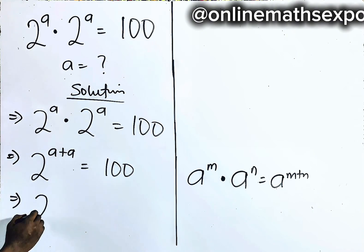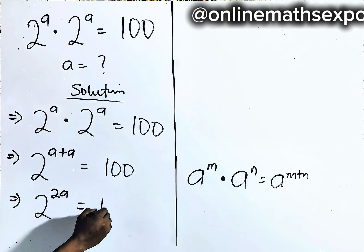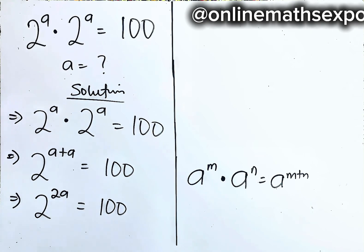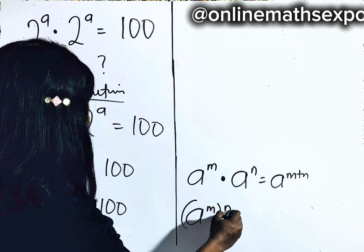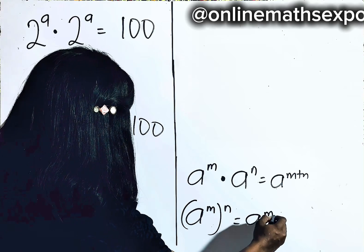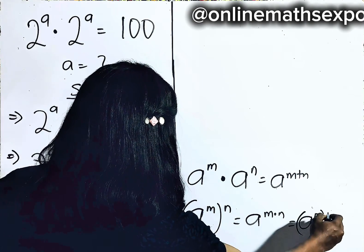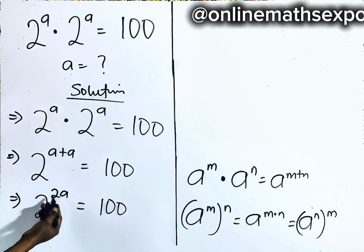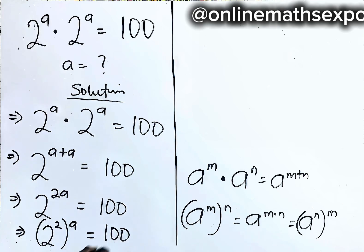Now what do you do next? This gives us 2 to the power of 2a is equal to 100. At this point, you just need to remember: for every a to the power of m raised to power n, it is a to the power of m multiplied by n. So here, this can be written as 2 to the power of 2, raised to power of a, is equal to 100.